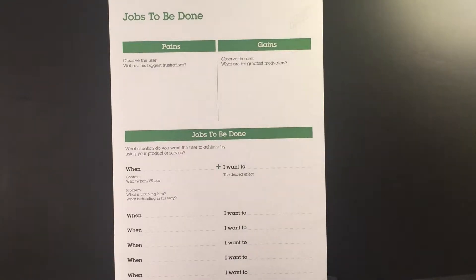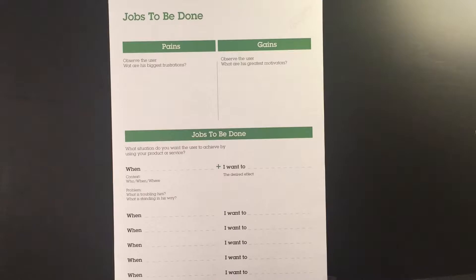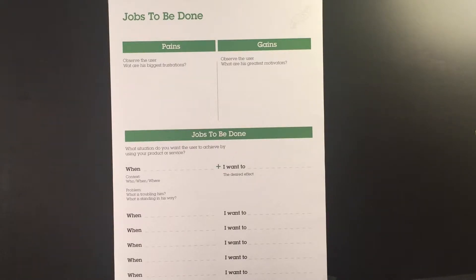Hi, in this video we're going to work out an example of a jobs to be done canvas. The jobs to be done tool is very useful to break down the real needs of the user. It breaks down the so-called jobs that have to be done to the essentials. From that moment on you have a few points to look after on which you can build your ideas.